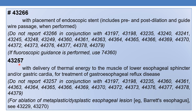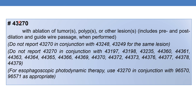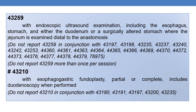The next is 43257: esophagogastroduodenoscopy, flexible, transoral, with delivery of thermal energy to the muscle of the lower esophageal sphincter and/or gastric cardia for treatment of gastroesophageal reflux disease (GERD). The next is 43270: esophagogastroduodenoscopy, flexible, transoral, with ablation of tumor, polyp, or other lesion, including pre- and post-dilation and guide wire passage when performed. The next CPT is 43259: esophagogastroduodenoscopy, flexible, transoral, with endoscopic ultrasound examination including the esophagus, stomach, and either the duodenum or a surgically altered stomach where the jejunum is examined distal to the anastomosis. Do not report 43259 more than once per session.